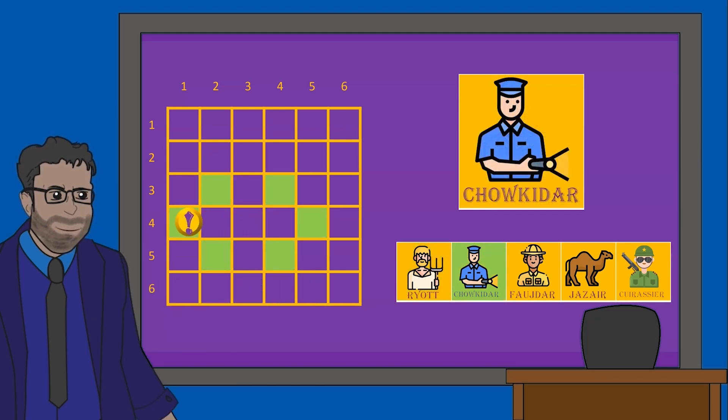Chalkadar is a guard. This can move horizontally by two spaces left or right, or he can move diagonally by one space.